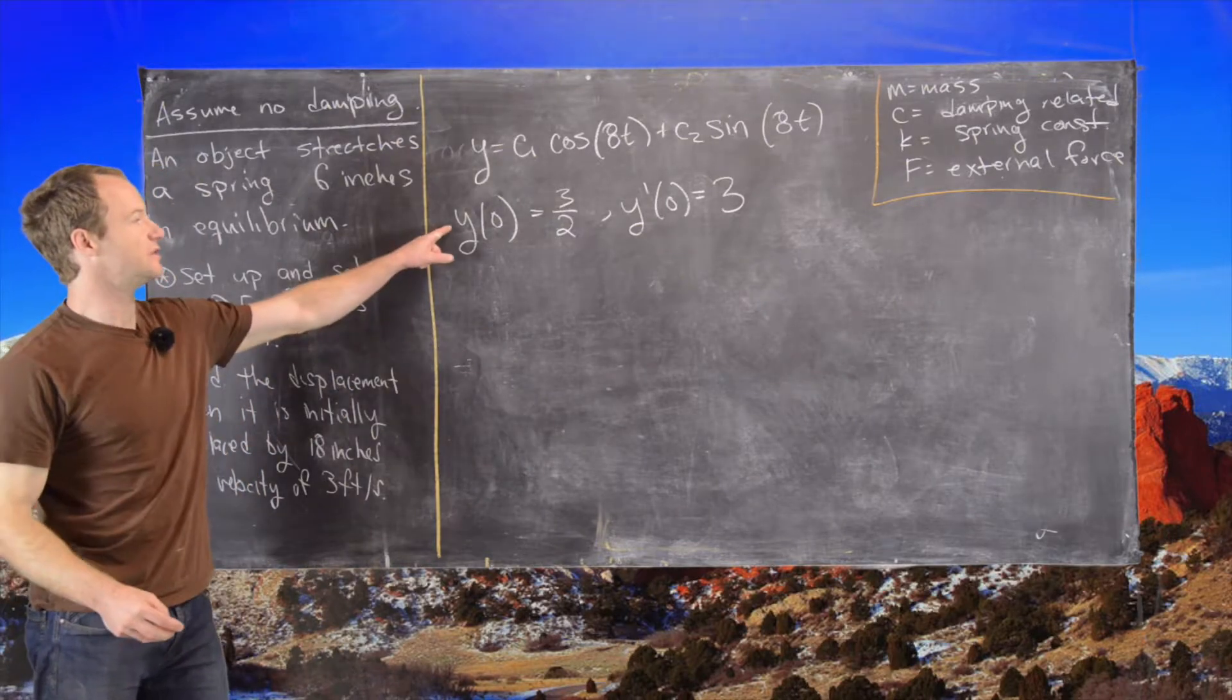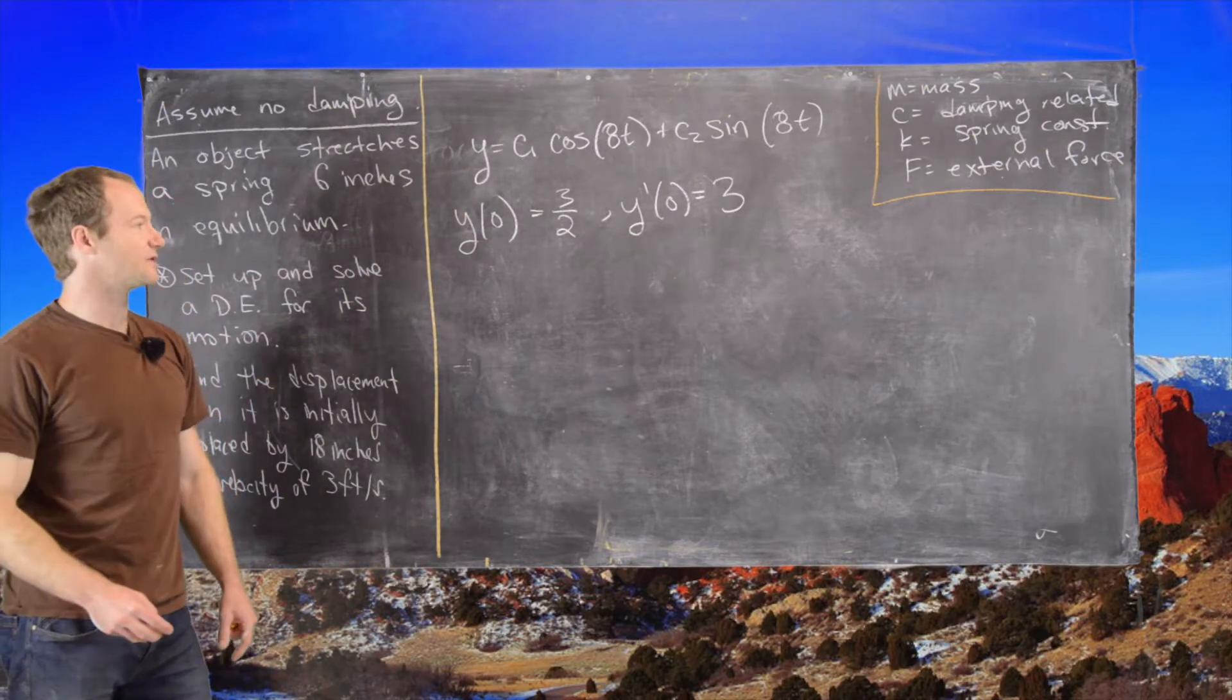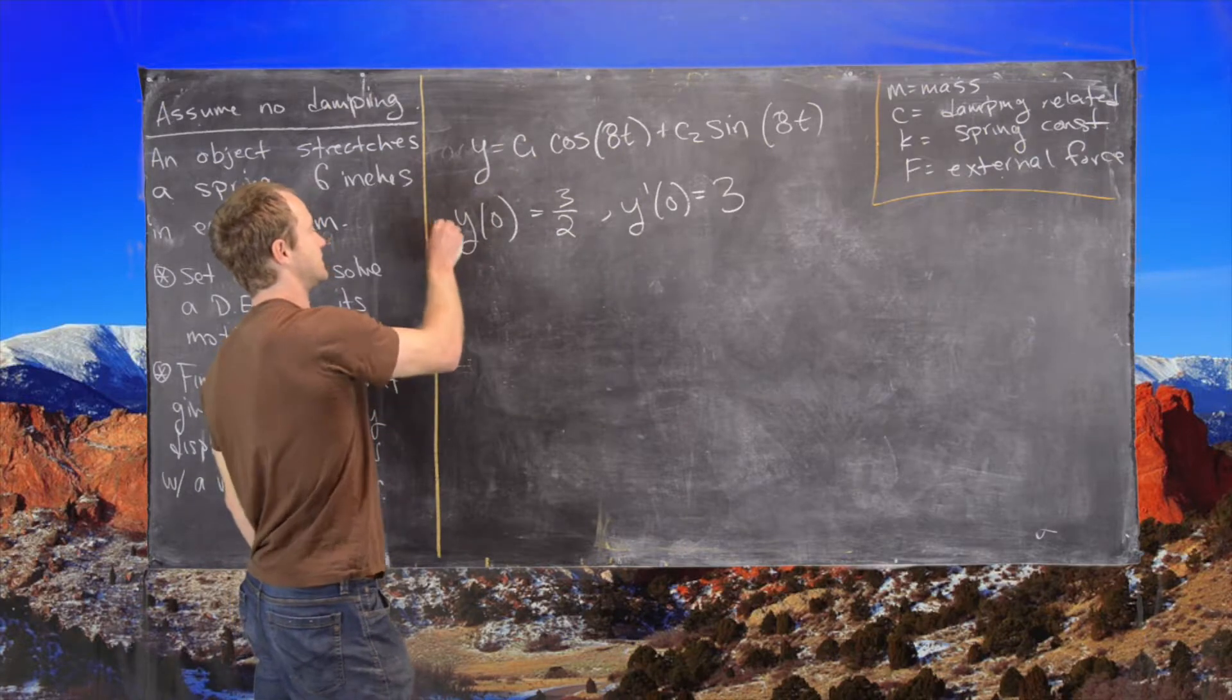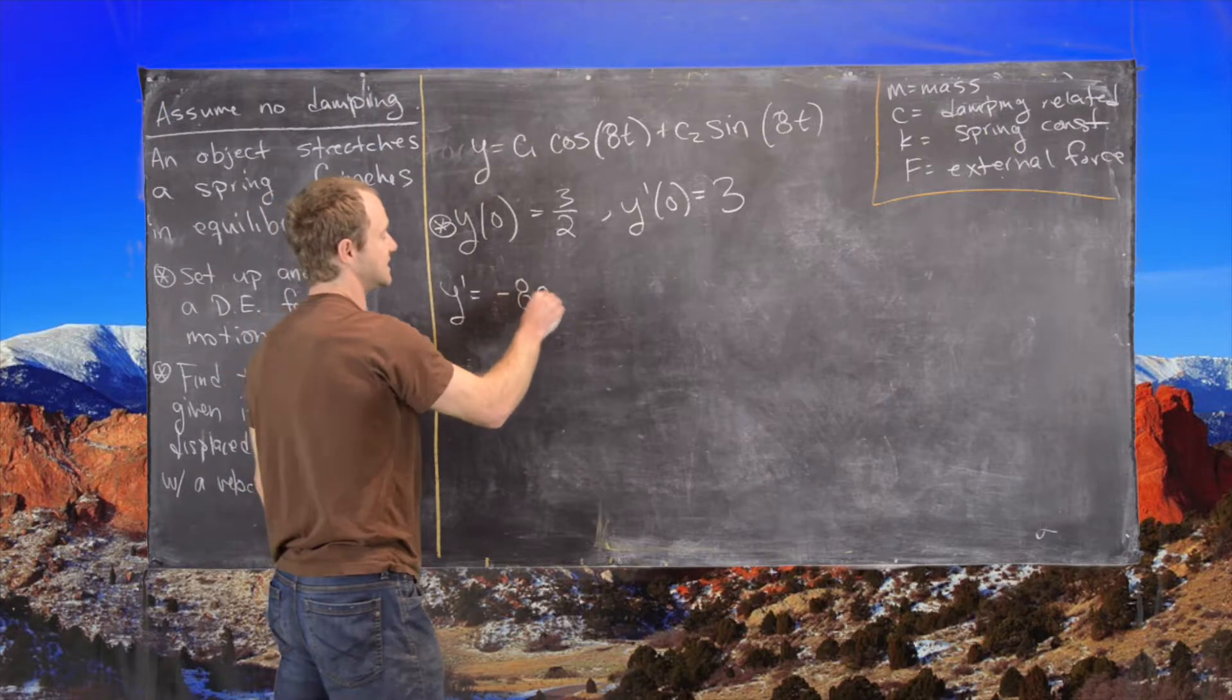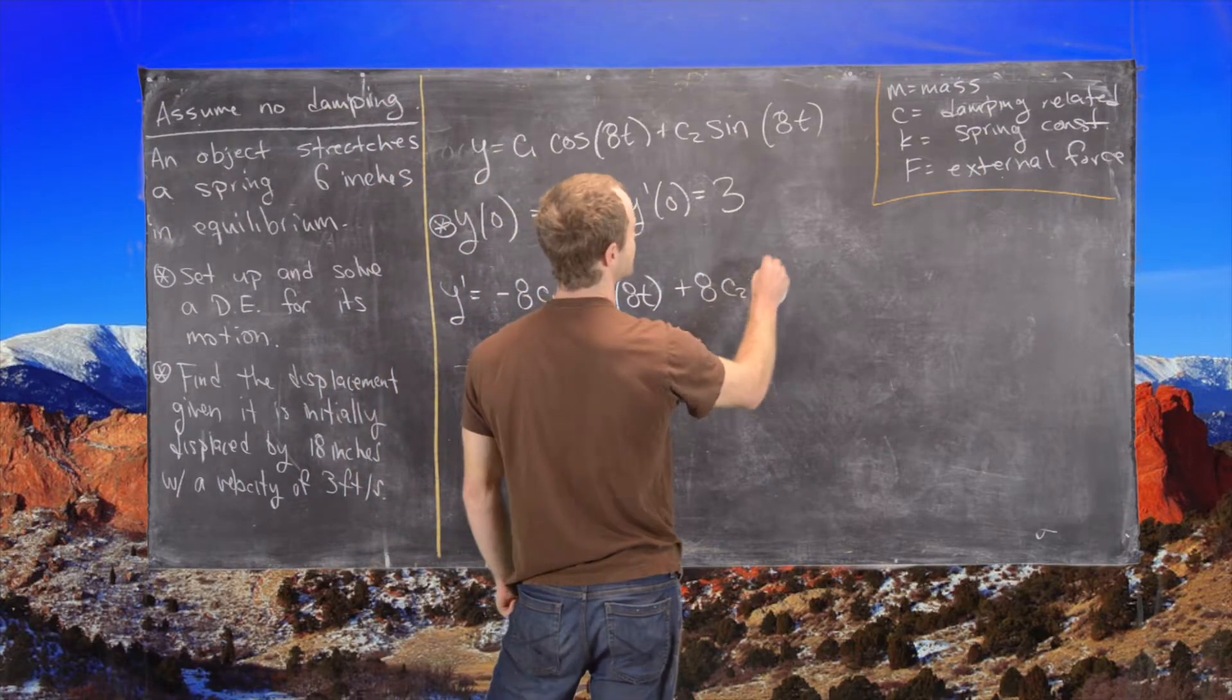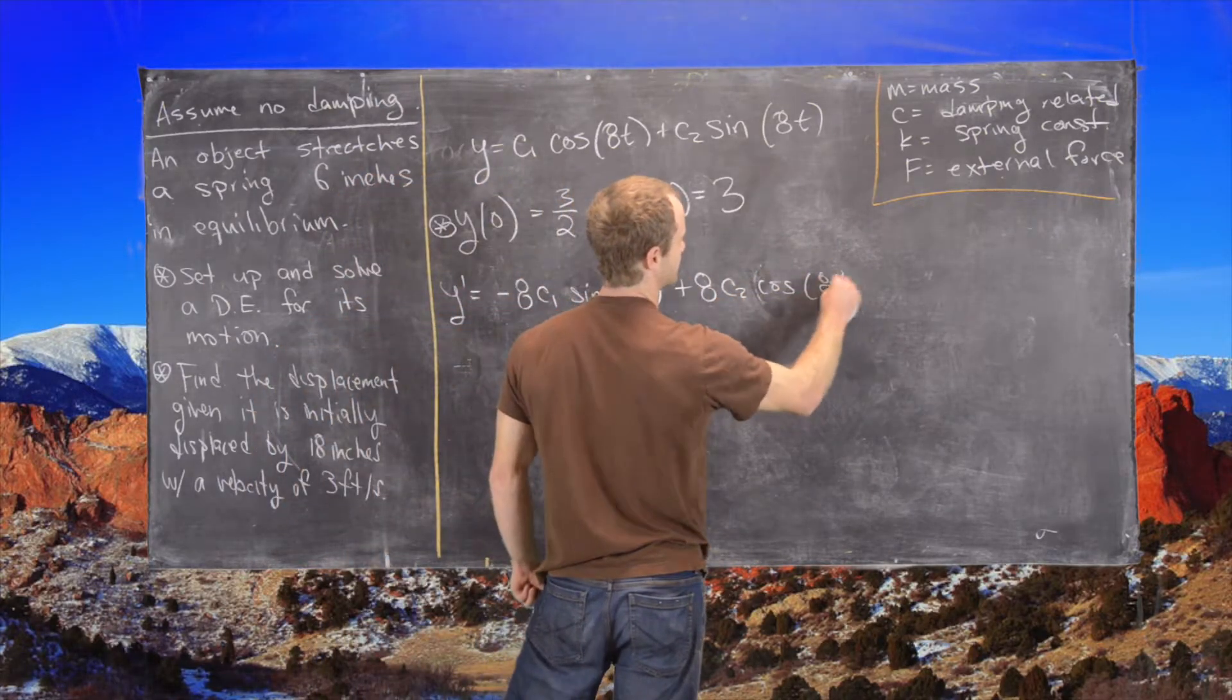So now what we can do is plug these two initial conditions into y and y prime, and we will be able to solve for c1 and c2. So let's do that. So we know y is equal to this, and we also know y prime will be equal to minus 8c1 sine of 8t plus 8c2 cosine of 8t.